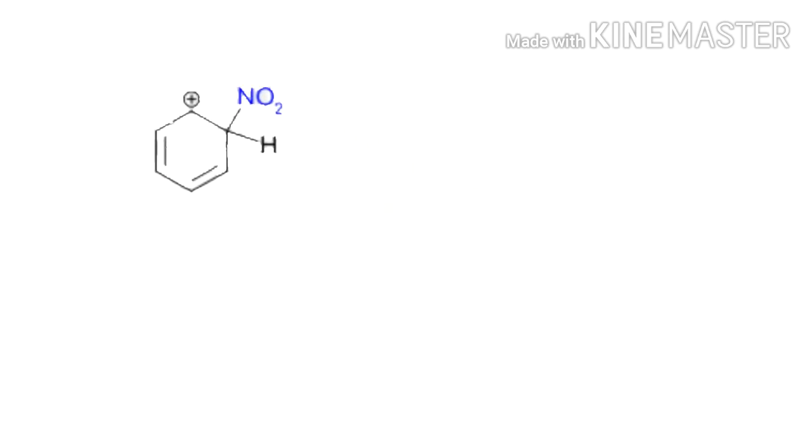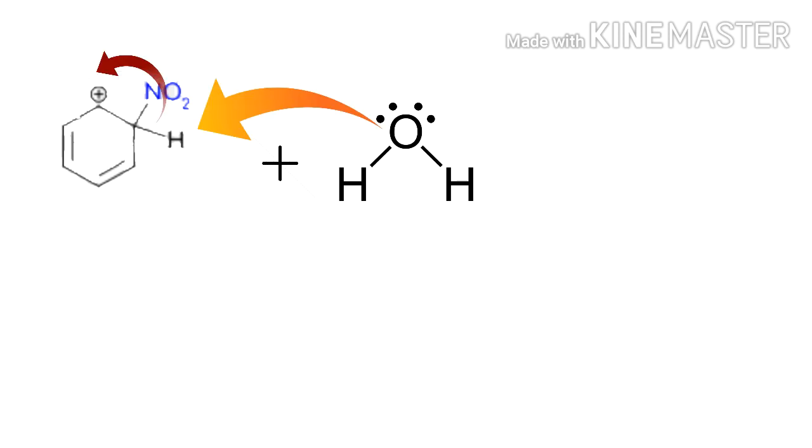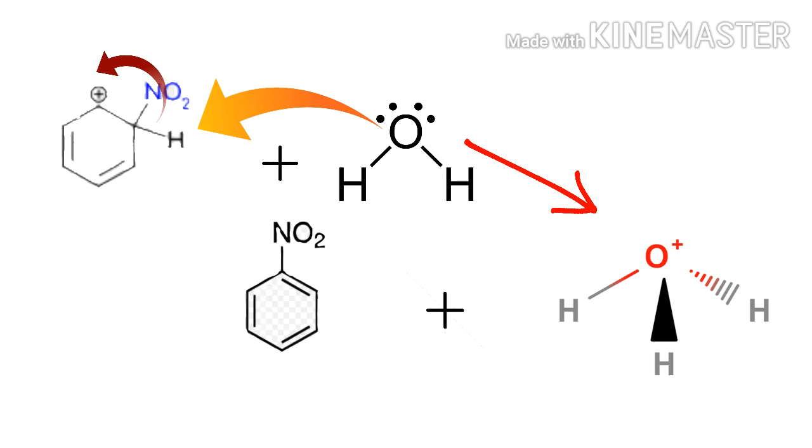The intermediate product combines with H3O positive. The electron density shifts to the carbon-carbon bonds within the benzene ring, forming nitrobenzene, the main product, and H3O positive (hydronium ion).